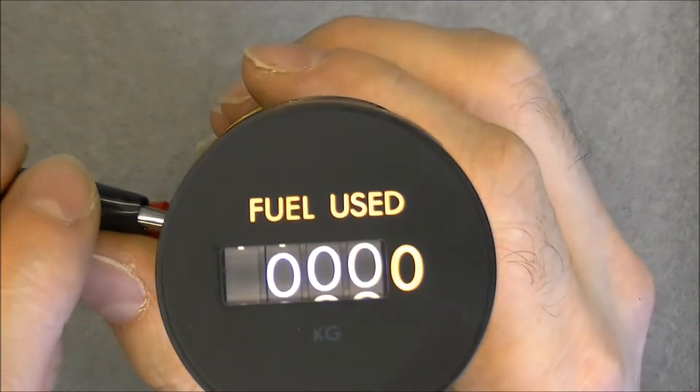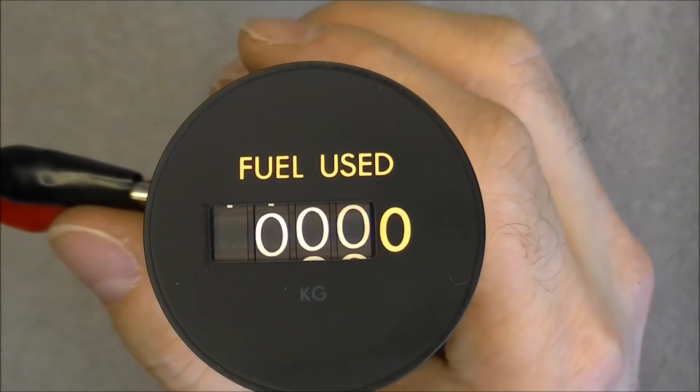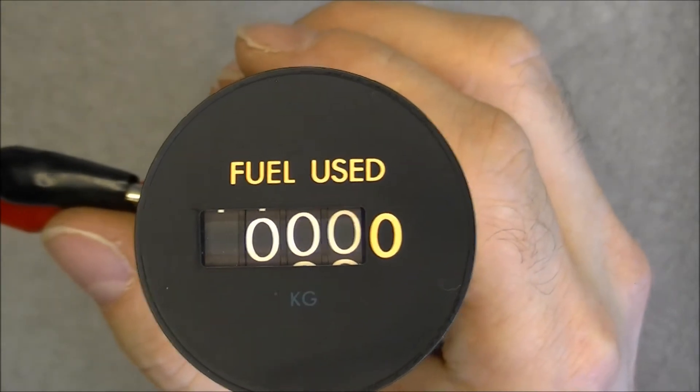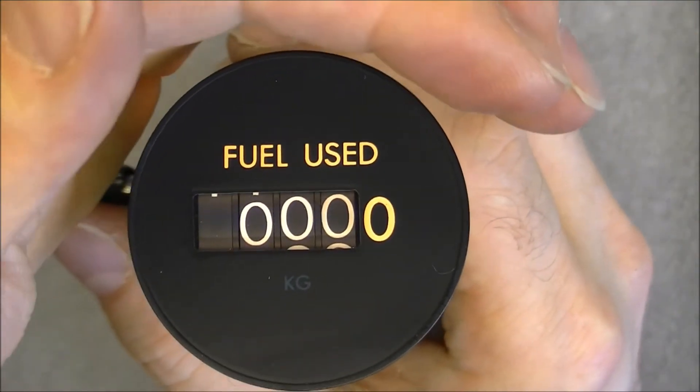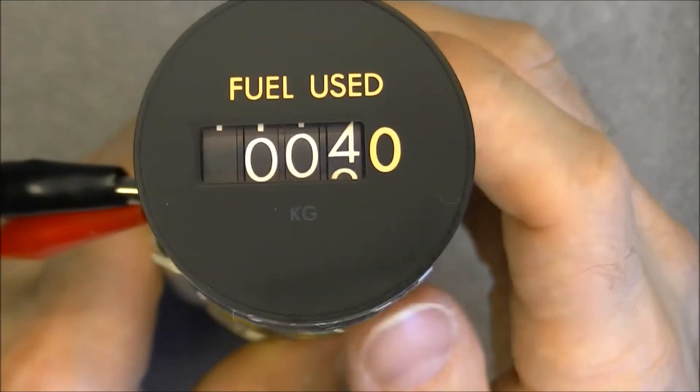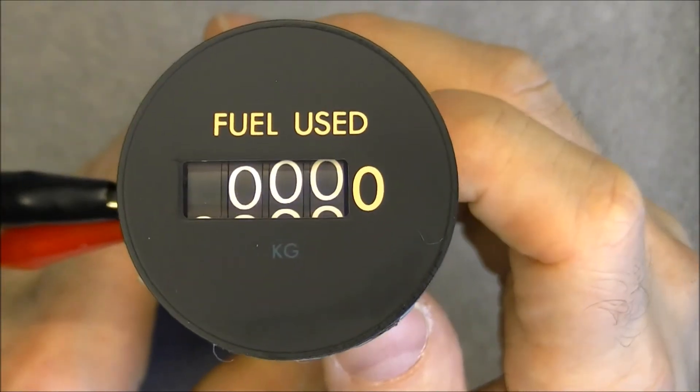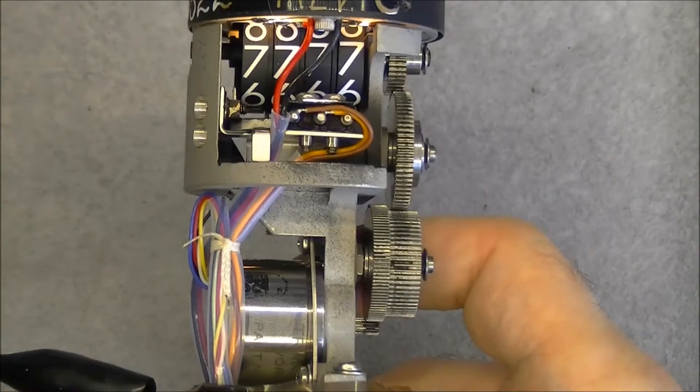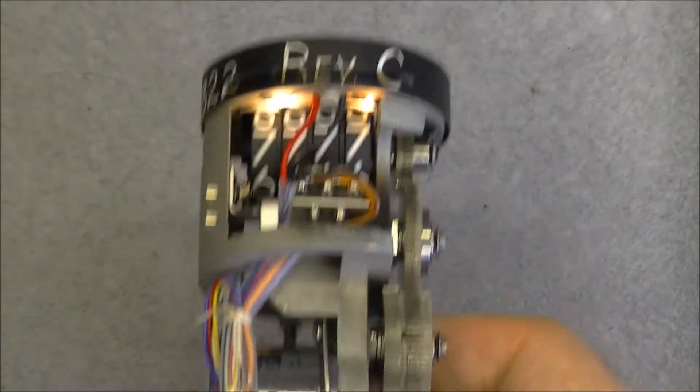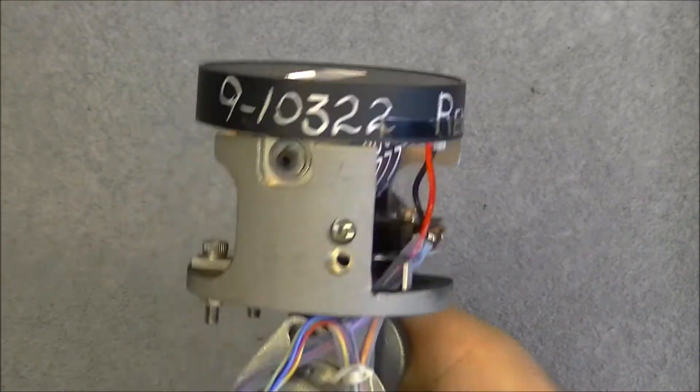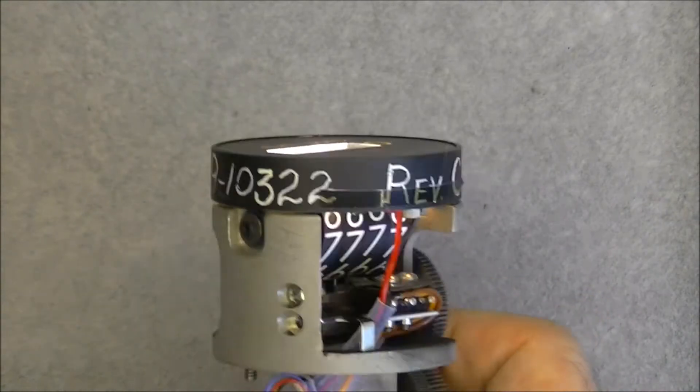But here we are. Maybe it is even overpowered. You can see the fuel used indication will light up and the digits will light up quite nicely. On this one at least the bulbs are not blown. There are four of them it seems. Yes.